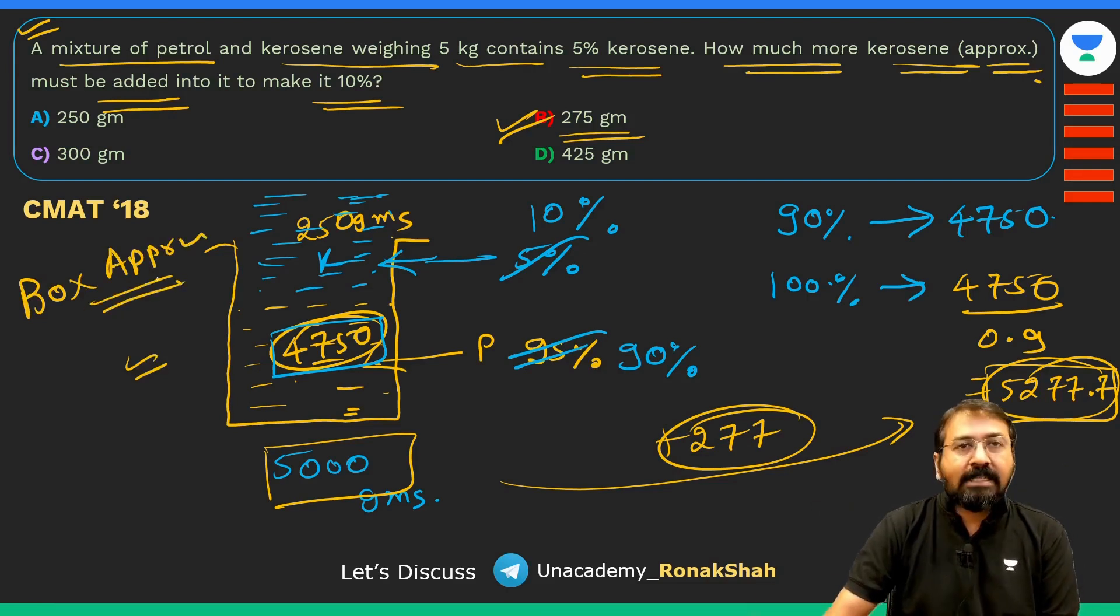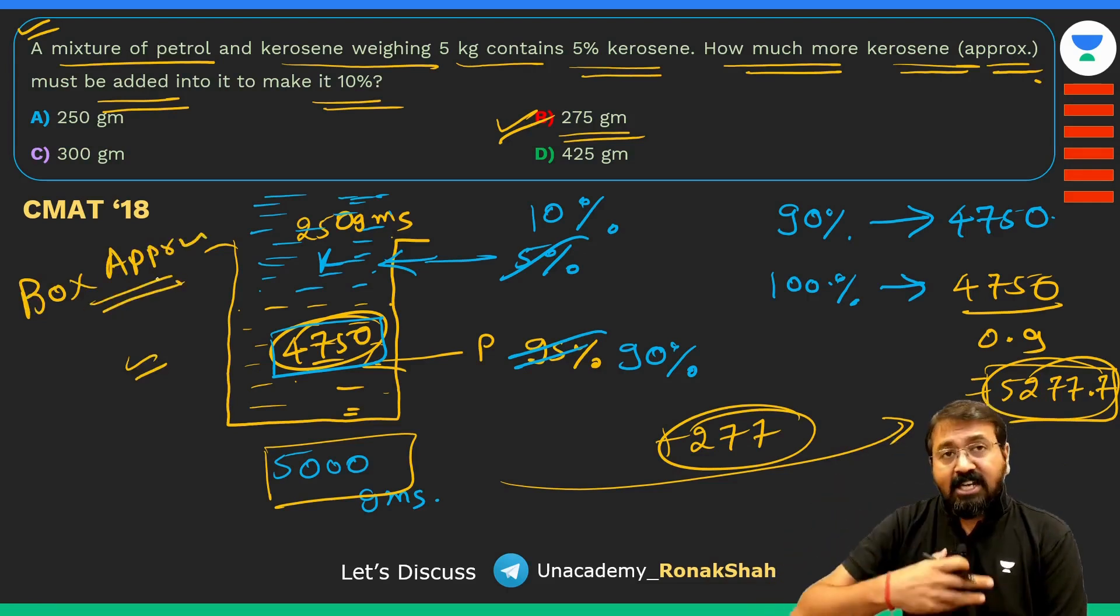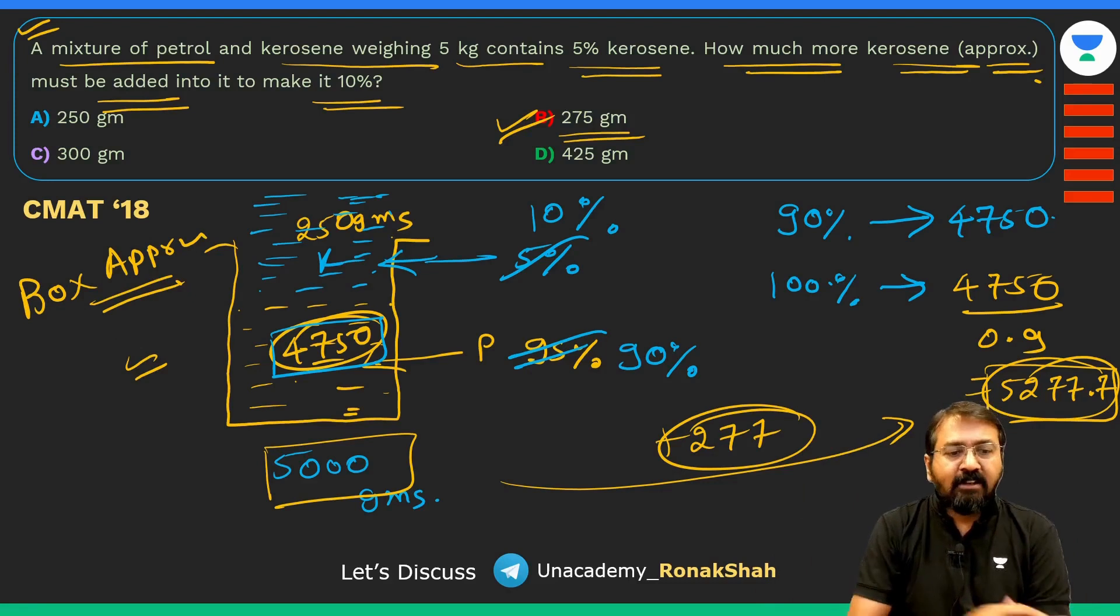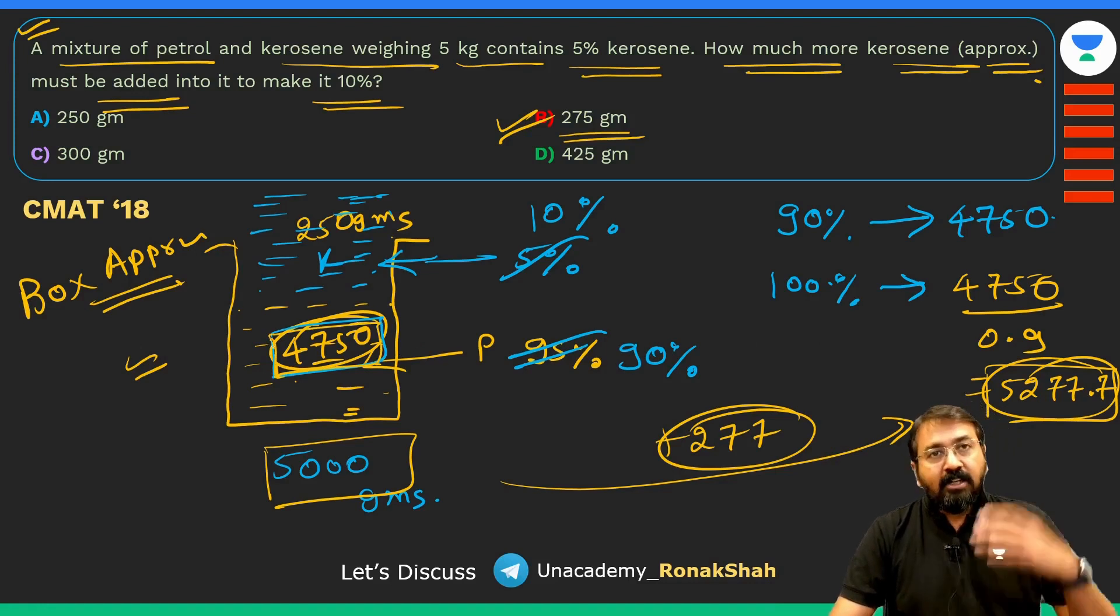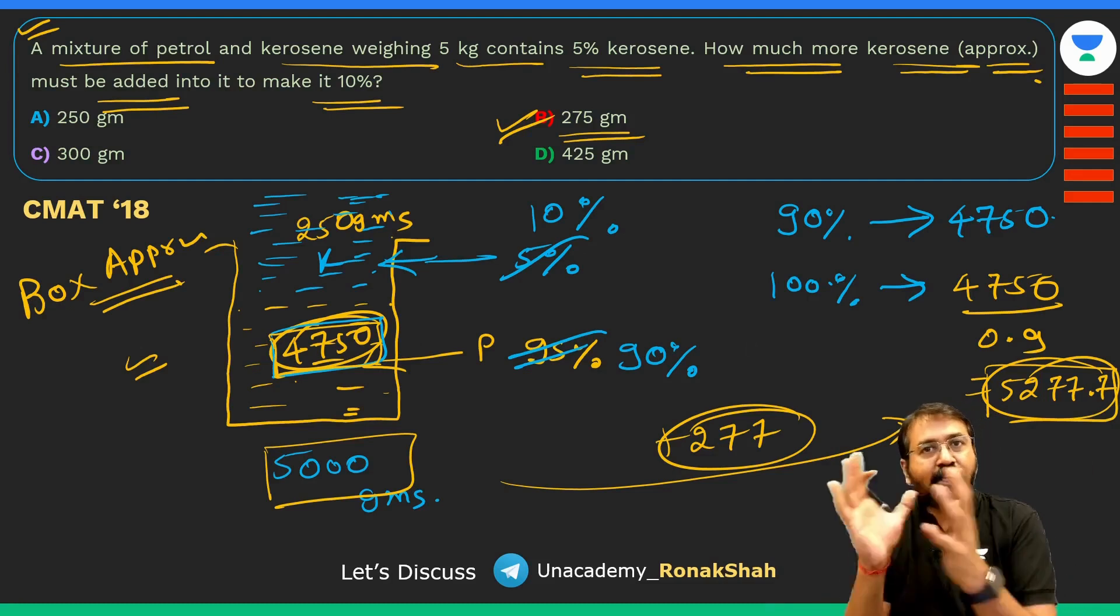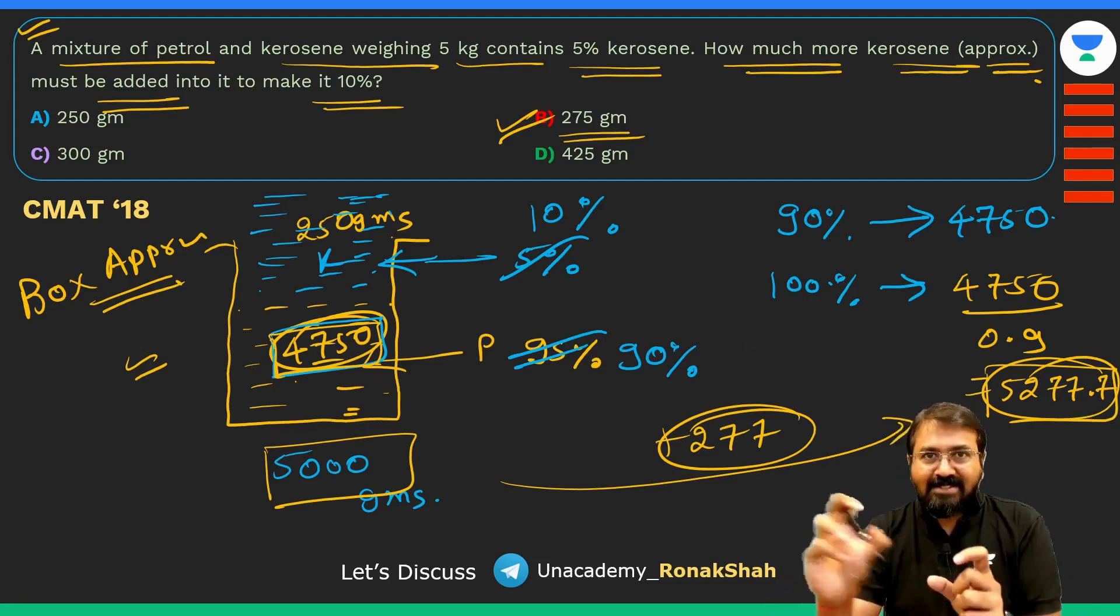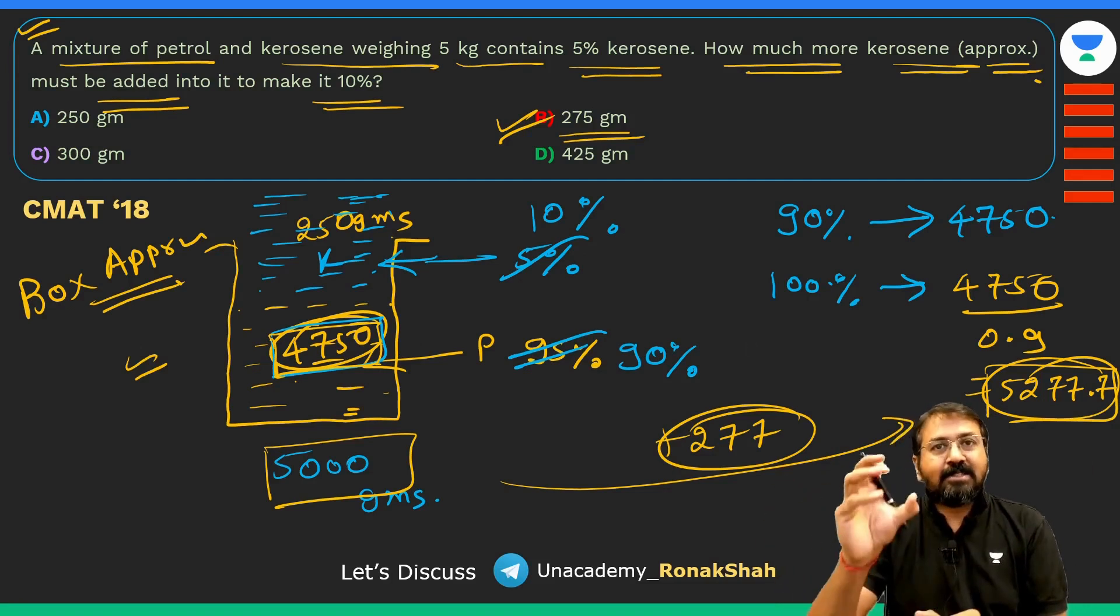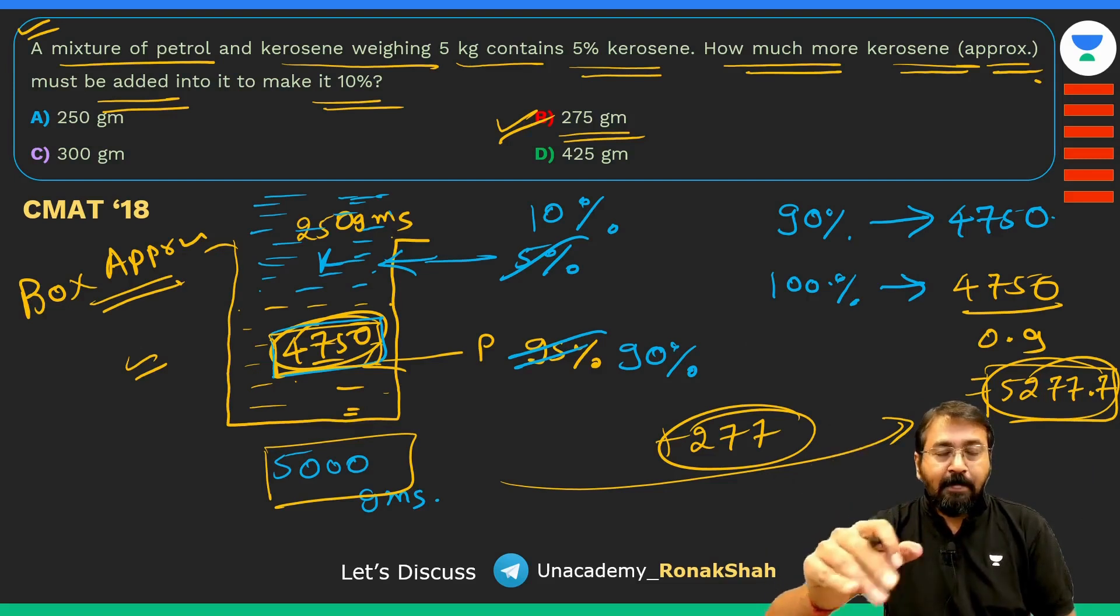If you look at this question it was just about that small calculation, nothing much. You should be able to understand it correctly. Don't make any complicated equation for such questions, just use this approach. I call it box approach. Just watch that video through the link that I have provided in the description, in that I have explained that box approach in detail.